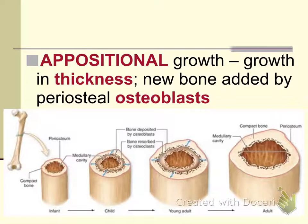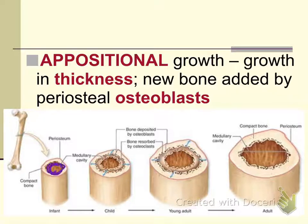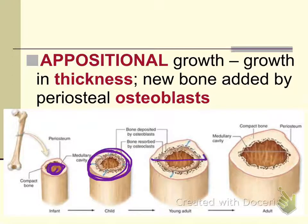Appositional growth means the bone is not only growing longer but also getting thicker — it is increasing in diameter. This is achieved by bone being destroyed on the inside at the same time that more bone is being formed on the outside, so the diameter increases. This is important because if the bone gets longer but stays the same thickness, it is more likely to break.